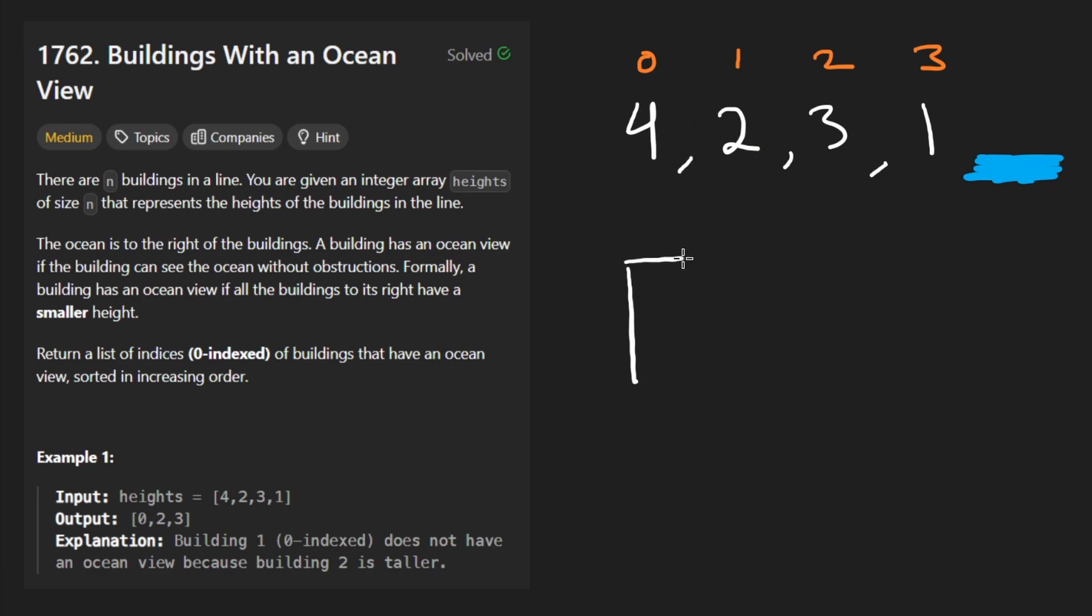In this example, we have indices 0, 1, 2, 3. How do we know if any of these buildings have a view of the ocean? Only buildings that don't have an obstructed view. Let me draw them out. This is building 4. Next we have building 2. Next we have building 3 with height of 3. And lastly, building 1. So you can just look at the first building. As long as there isn't any building greater than or equal to the height of this one, then it has a view.